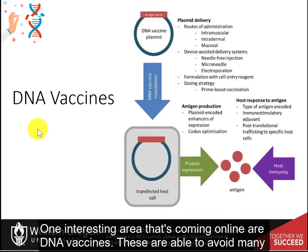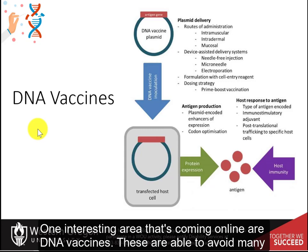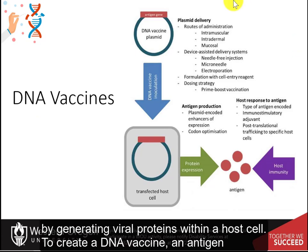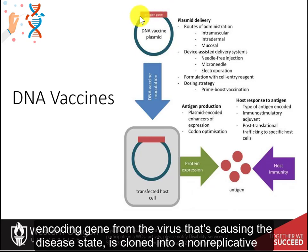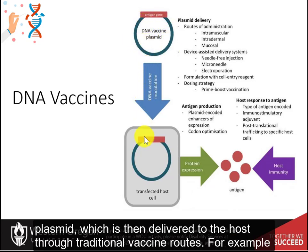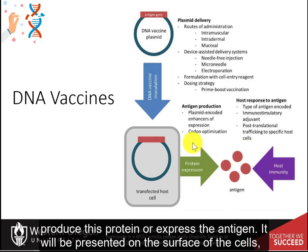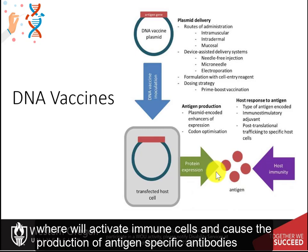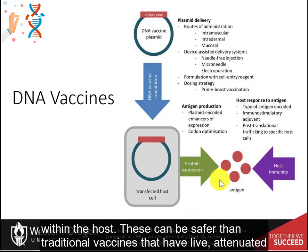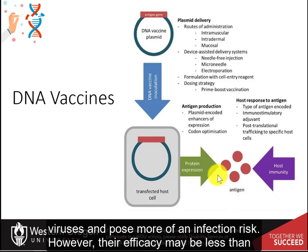One interesting area coming online is DNA vaccines. These are able to avoid many issues associated with egg-based vaccine production by generating viral proteins within a host cell. An antigen-encoding gene from the disease-causing virus is cloned into a non-replicative plasmid, which is then delivered to the host through traditional vaccine routes, such as needle injection intramuscularly. The host cells take up the plasmid and express the antigen on their surface, activating immune cells and producing antigen-specific antibodies. These can be safer than traditional vaccines with live attenuated viruses, though their efficacy may be less.